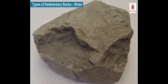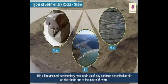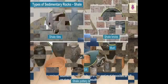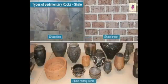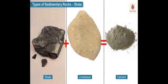Shale is a fine-grained sedimentary rock made up of clay and mud deposited as silt on riverbeds and at the mouth of rivers. Shale is mostly used in tiles, bricks, and pottery items. It is also used to make cement by adding limestone to it.